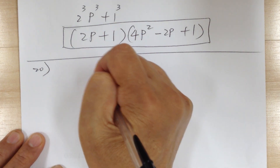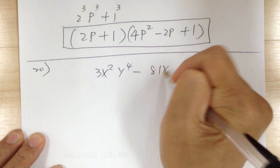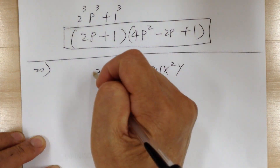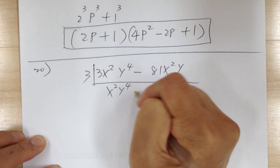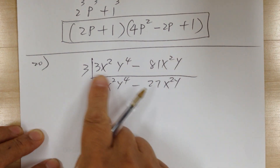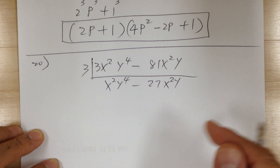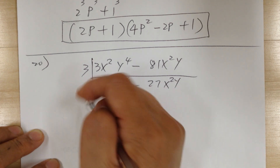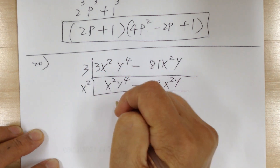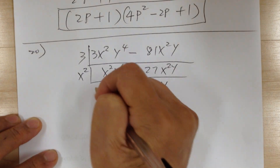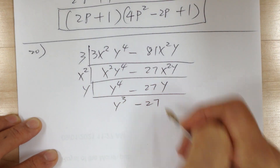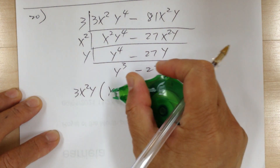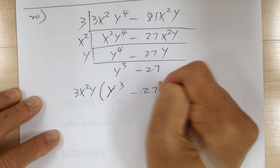Number 20: 3x²y⁴ - 81x²y. Step 1, common factor — factor out 3 from 3 and 81. You get 3(x²y⁴ - 27x²y). Then factor out x²: 3x²(y⁴ - 27y). Then factor out y: 3x²y(y³ - 27). That's your step 1: 3x²y(y³ - 27). Now continue down the list for the remaining factor.